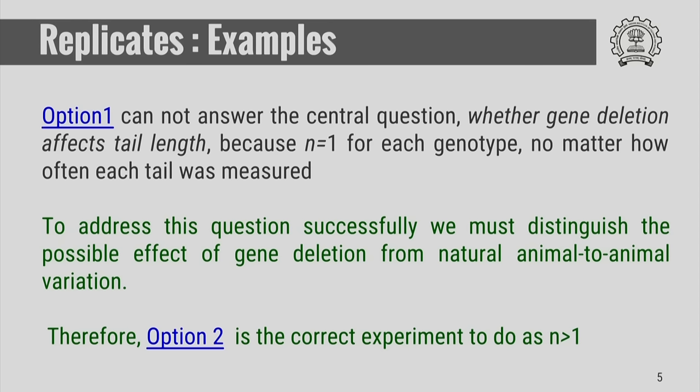It does not matter how many times you measure the tail length of a single individual. To address this question successfully, you must distinguish the possible effect of gene deletion from natural animal-to-animal variation. Therefore, option two is the correct way of doing the experiment, because the sample size is greater than one.